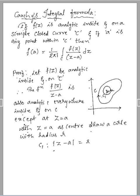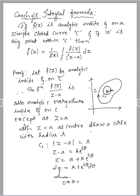Differentiating on both sides with respect to theta, we get dz equal to r i e power i theta d theta, since the derivative of e power i theta is e power i theta into i. Where theta lies between 0 and 2 pi, as it is a simple and closed curve c1, so the range is 0 to 2 pi.